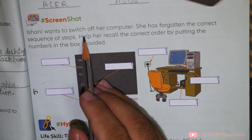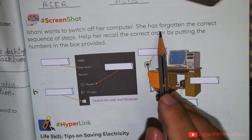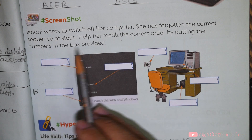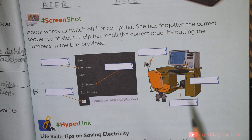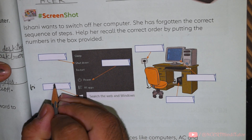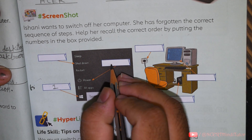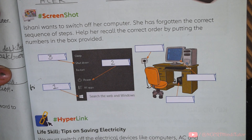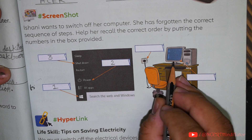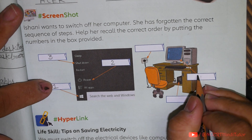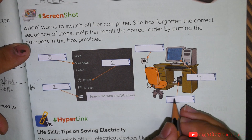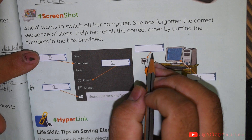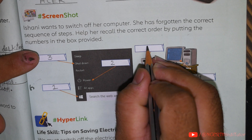Screenshot activity: Ishani wants to switch off her computer and has forgotten the correct sequence of steps. Help her recall the correct order. First, press the start button. Second, press the power option. Third, select the shutdown option. Fourth, switch off the monitor. Fifth, switch off the UPS. Sixth, switch off the main power supply.